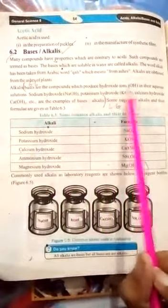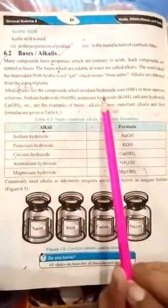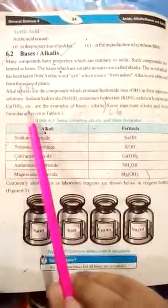The examples are sodium hydroxide, potassium hydroxide, calcium hydroxide, etc. These are the examples of bases or alkalis.